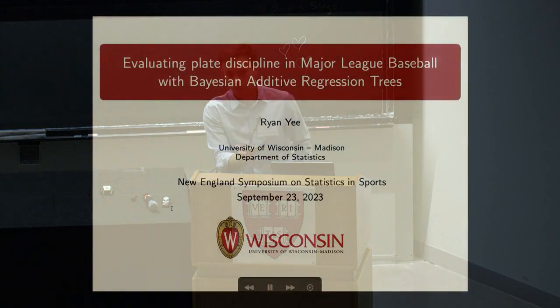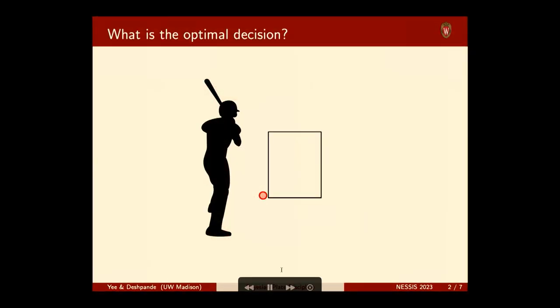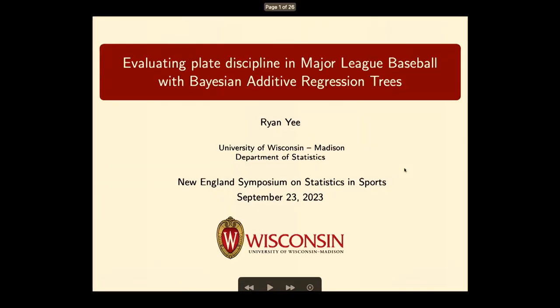Thank you for the introduction, and thank you everyone for coming today. I'm going to be introducing a framework for determining whether or not a batter should swing at a pitch. Our framework differs from existing approaches in two important ways: first, we incorporate contextual factors about when the pitch was thrown; and second, we quantify how sure we are that the decision we identify is indeed the correct one.